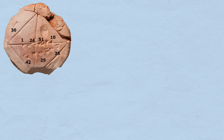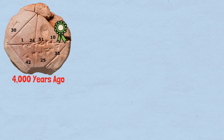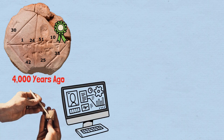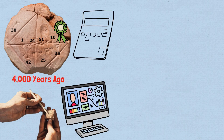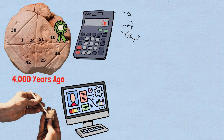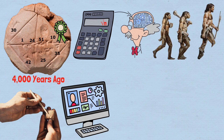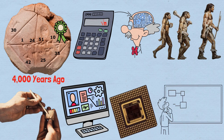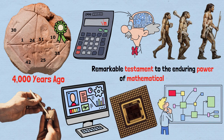The Babylonian square root algorithm represents one of humanity's most enduring mathematical achievements. Developed nearly 4,000 years ago by mathematicians working with clay tablets and styluses, it demonstrates computational principles that remain optimal by modern standards. When you next use a calculator to find a square root, remember that you're participating in an unbroken tradition of mathematical thinking that stretches back to the very beginnings of recorded civilization. The clay tablet may have given way to silicon chips, but the underlying logical structure remains unchanged — a remarkable testament to the enduring power of mathematical insight.